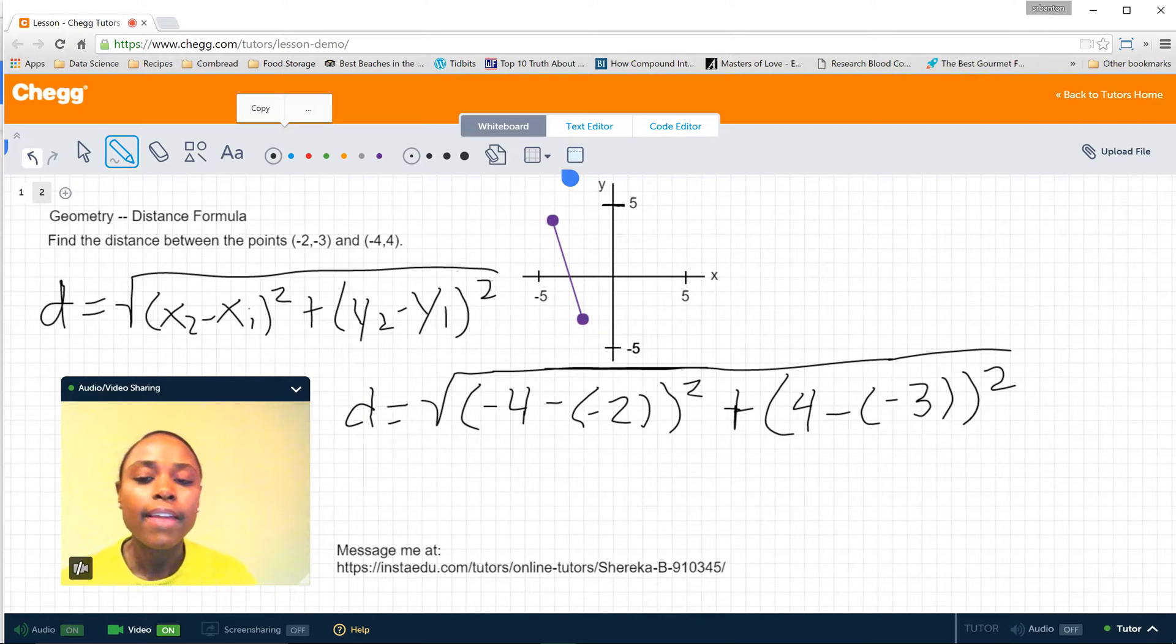And I should mention that it doesn't matter which of the ordered pairs you designate as subscript 1 or 2, just so long as you maintain the actual ordered pair. So in this case x2 is (-4), therefore y2 has to be 4, since that was what was in the ordered pair.